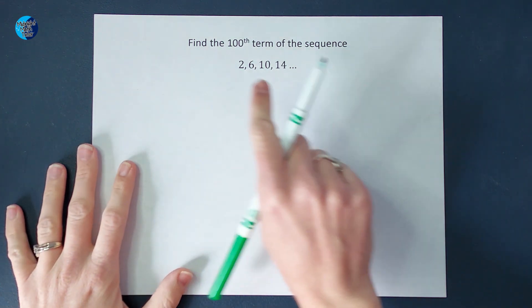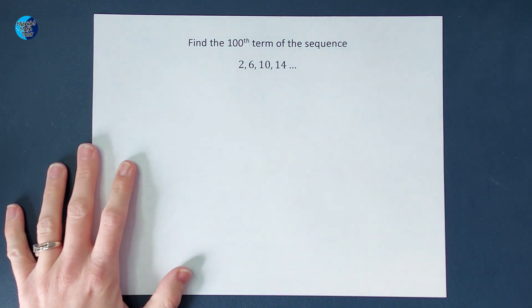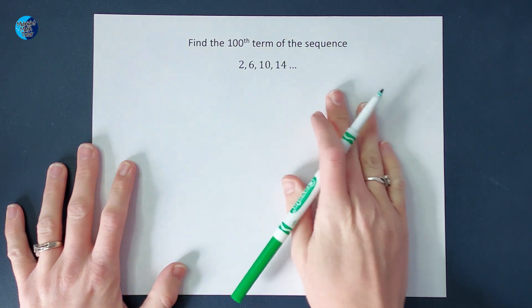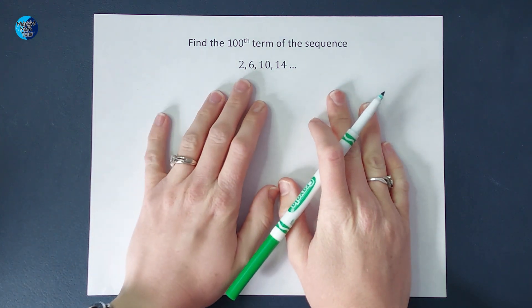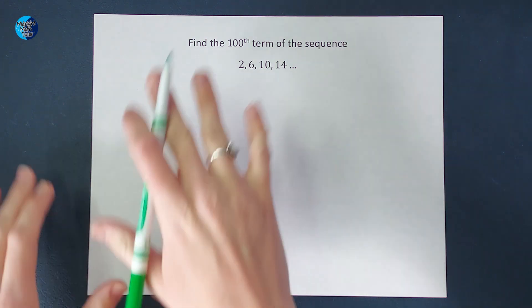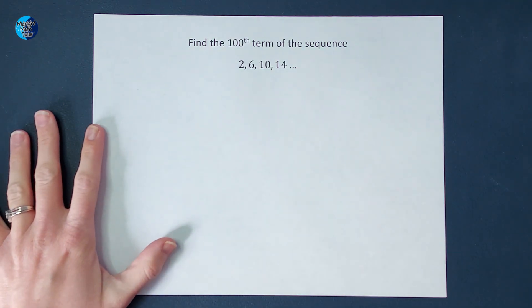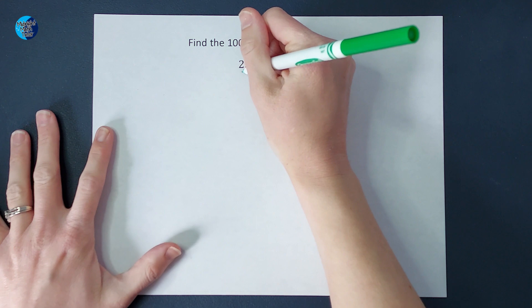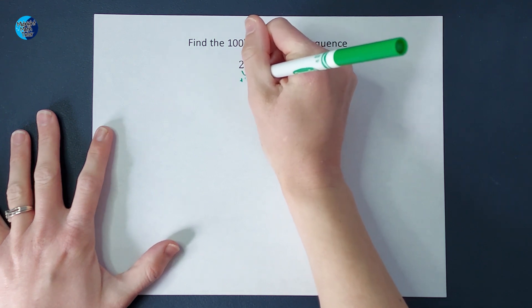Hey guys, we are looking at a sequence and we want to find the hundredth term in this sequence. The first thing I'm going to do is figure out the pattern. What is being added or multiplied or whatever to these numbers to get us the next one? Well, when I look at it for a minute, I figure out that we are adding four each time.